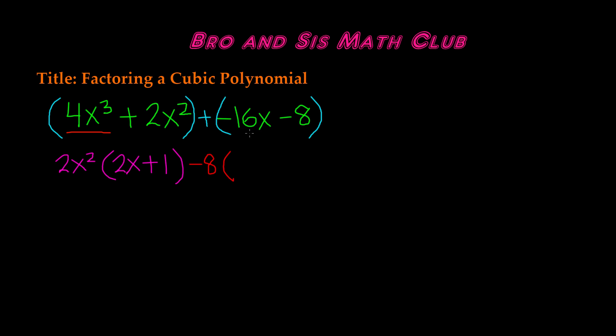And then in our parentheses, we're going to divide. So -16x divided by -8 is going to give you positive 2x. -8 divided by -8 is going to give you 1, so it's going to be positive 1.